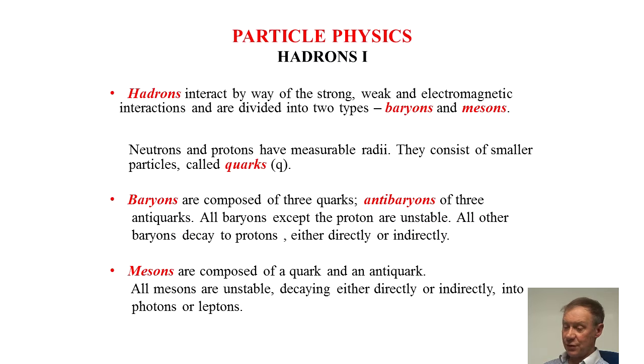Mesons are composed of a quark and an antiquark. All mesons are unstable decaying either directly or indirectly into photons or leptons.